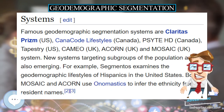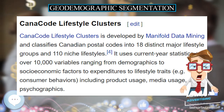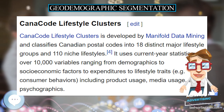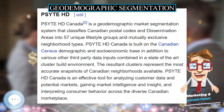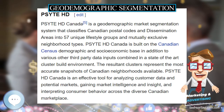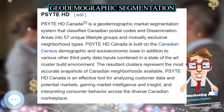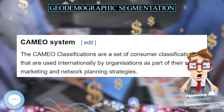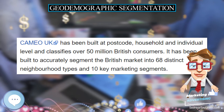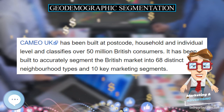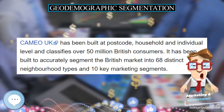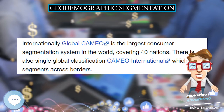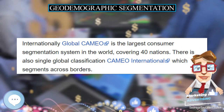ESRI Community Tapestry. This method classifies US neighborhoods into 65 market segments based on socio-economic and demographic factors, then consolidates these segments into 14 types of life modes with names such as High Society, Senior Styles, and Factories and Farms. The smallest spatial granularity of data is produced at the level of the US Census Block Group.